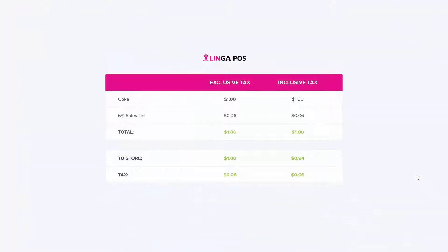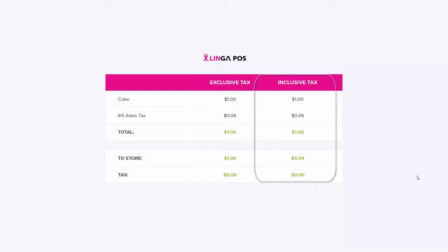There are two different types of tax in Linga: exclusive and inclusive taxing. With exclusive taxing, a Coke would cost one dollar plus six percent sales tax — the total would be one dollar and six cents, with one dollar going to the store and six cents going to tax. Whereas with inclusive taxing, the same Coke for one dollar and six percent sales tax, the total would be one dollar, with ninety-four cents going to the store and six cents going to tax.